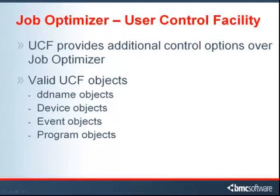Once a job has been selected by the Job Optimizer, the User Control Facility, or UCF, provides additional options to control how to handle specific DD names, devices, events, and programs. These actions are set in the UCF policy.